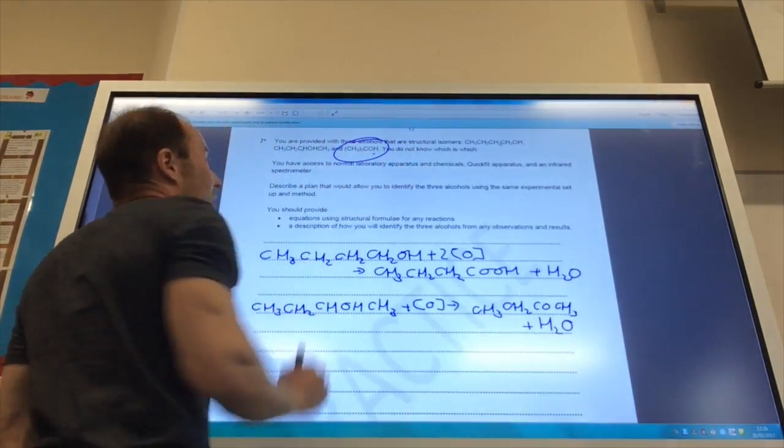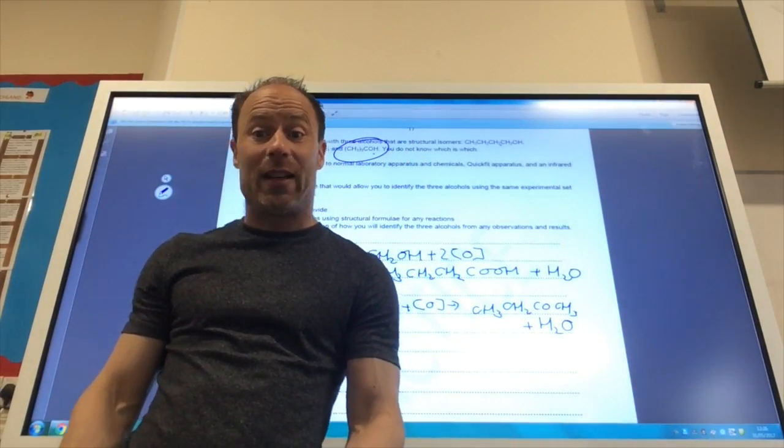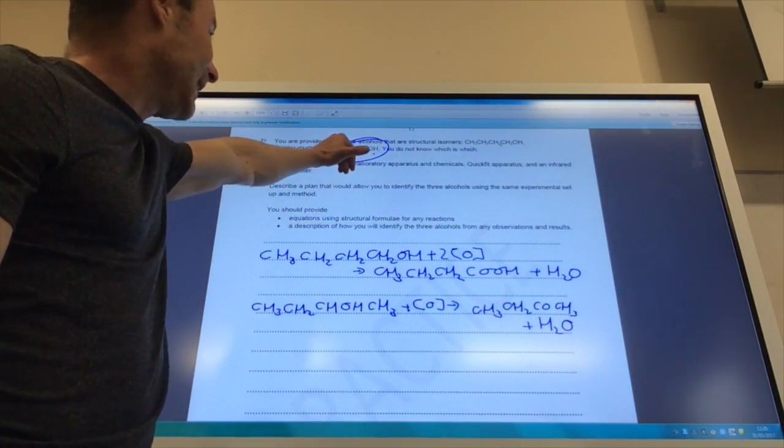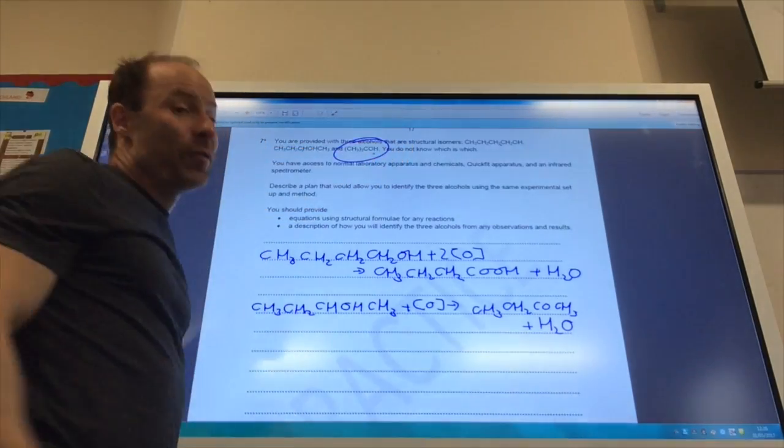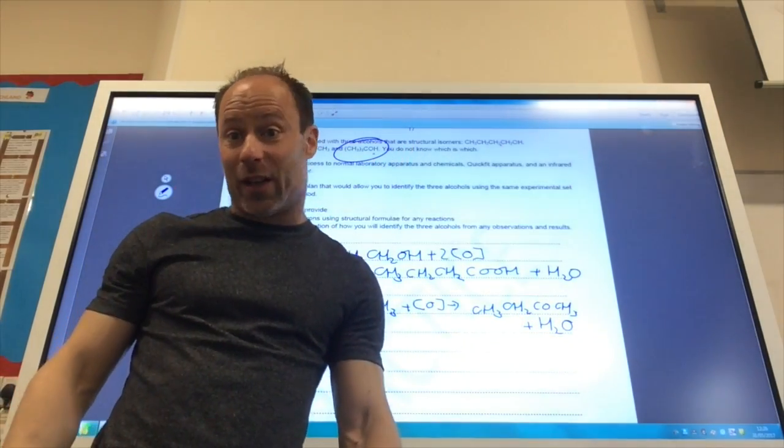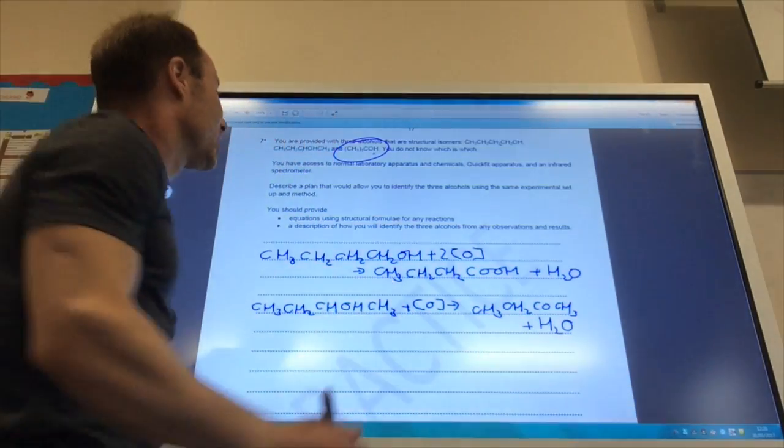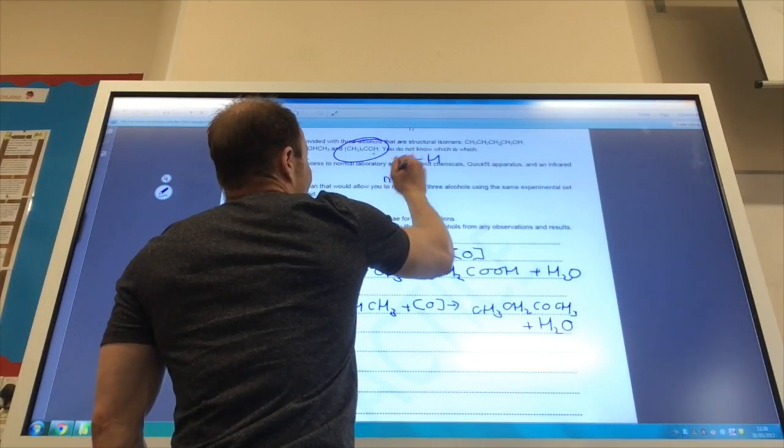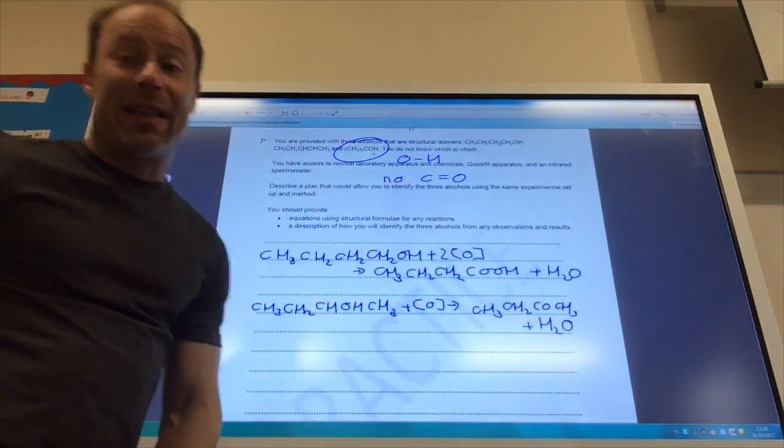And for the final one, this would not be oxidized. So, first of all, I wouldn't see a color change from orange to green when I oxidized it. However, secondly, if I ran the IR of that one, I would see an OH for an alcohol group, but I would not see a C double bond O band. So, I would only see OH for an alcohol. I would not see C double bond O. And by that way, I can identify all three by infrared spectroscopy.